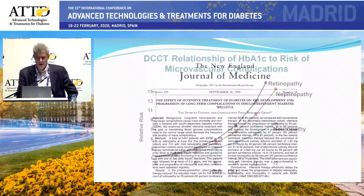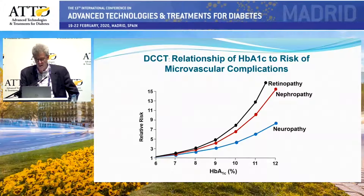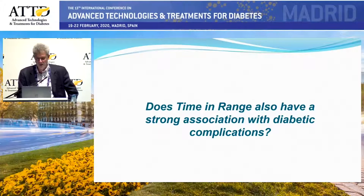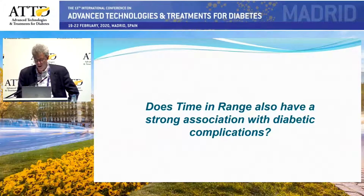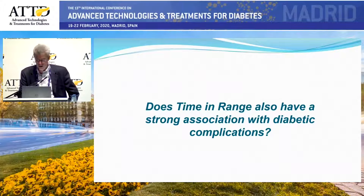We're all familiar with the DCCT and the classic relationship between hemoglobin A1C and complications — higher A1C related to complication rates of retinopathy, neuropathy, or nephropathy. Although it seems logical, the answer to this question, from what I just showed — we have pretty convincing evidence that time in range and hemoglobin A1C are, from a glycemic point, measuring the same thing — that this association would be strong with diabetic complications and time in range. But it needs to be shown.